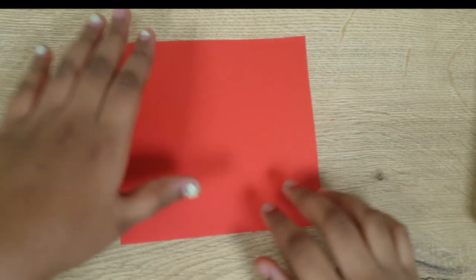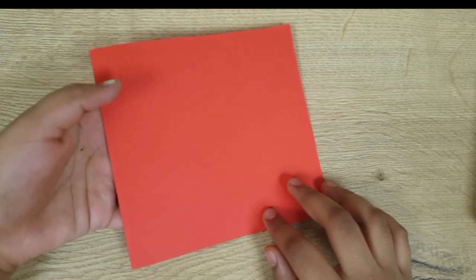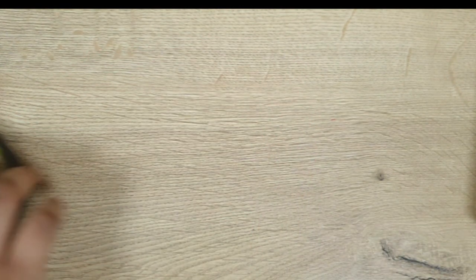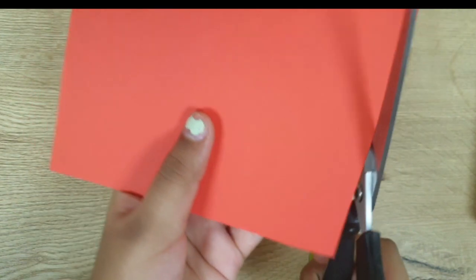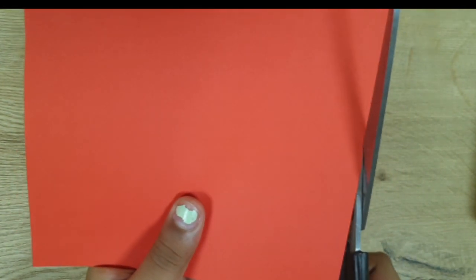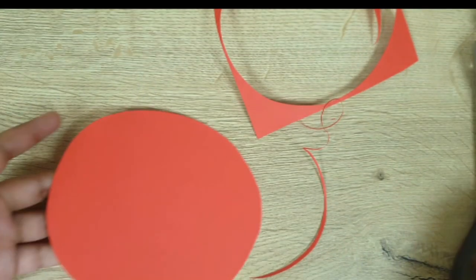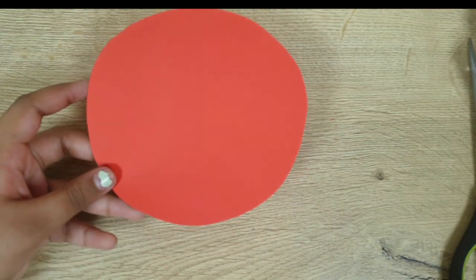Take your paper, your square sheet, and cut a circle out of it. Okay, so I have got the shape which I want.